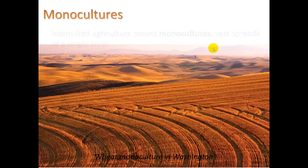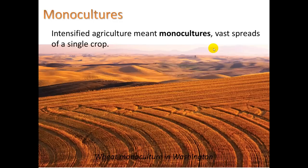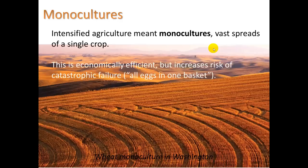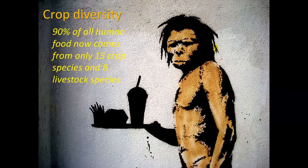One typical feature of the Green Revolution is the intensified agriculture that resulted in monoculture — vast spreads of a single crop. This is economically efficient, but it increases the risk of catastrophic failure — you're putting all your eggs in one basket. Here we see a wheat monoculture in Washington state. It has also reduced crop diversity. The typical American supermarket now contains very few types of grain; our diet is mostly wheat and corn — even soda contains corn in the form of corn syrup. 90% of all human food now comes from only 15 crop species and 8 livestock species.